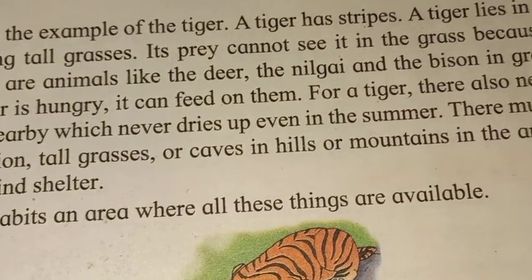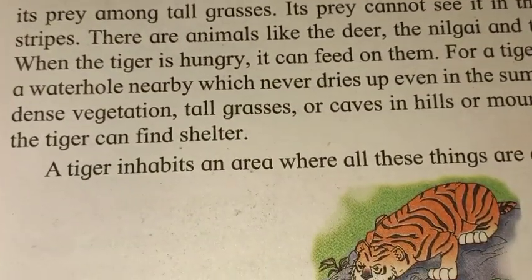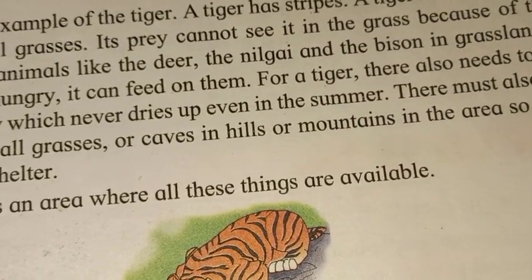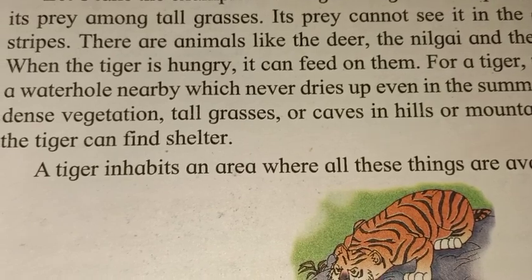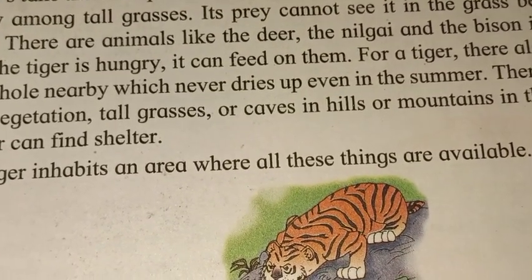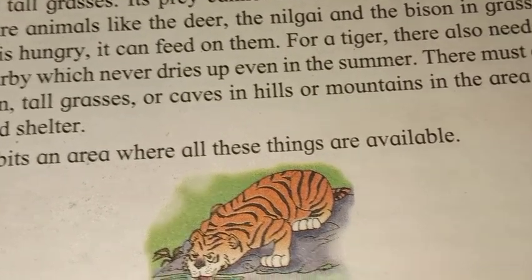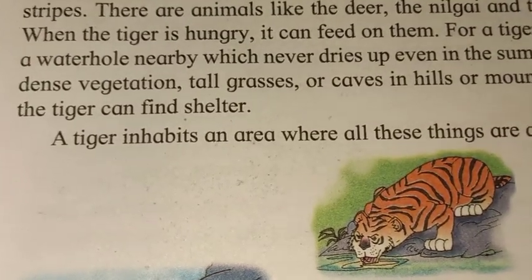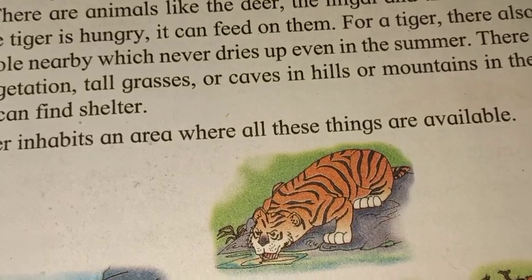Its prey cannot see it in the grass because of the stripes. There are animals like deer, neelgai, and bison in the grassland. When the tiger is hungry, it can feed quickly because these prey animals also eat grass and are available nearby. For a tiger, there also needs to be a water hole nearby which never dries up even in summer.